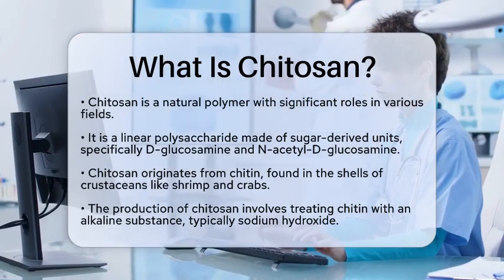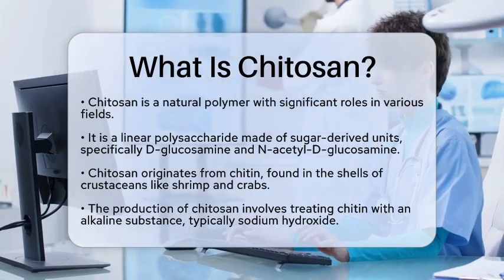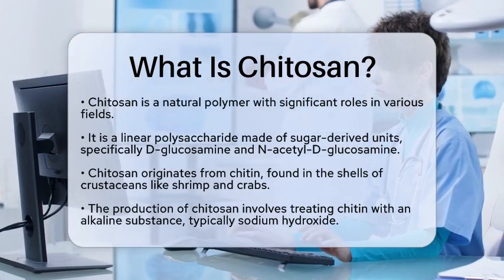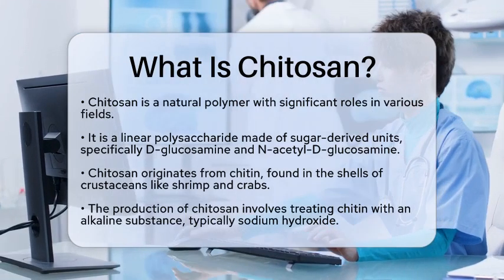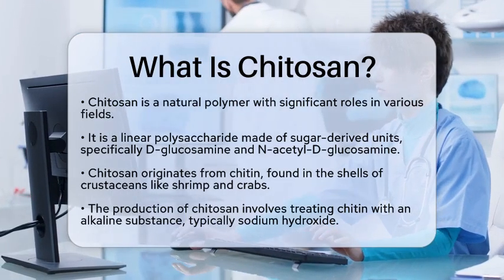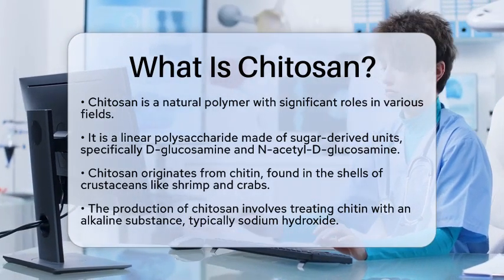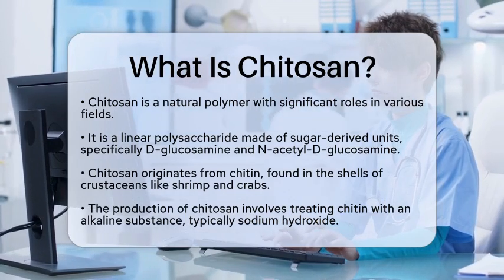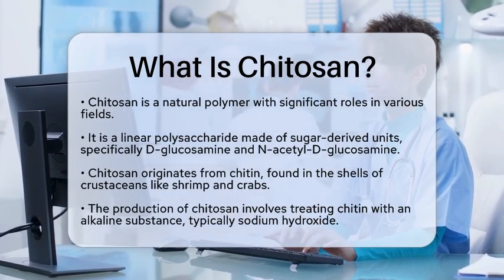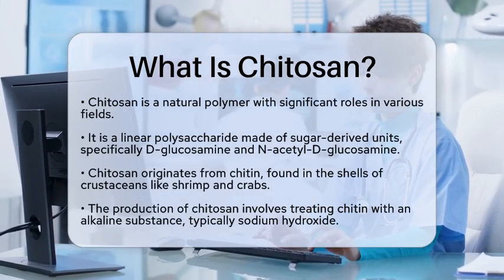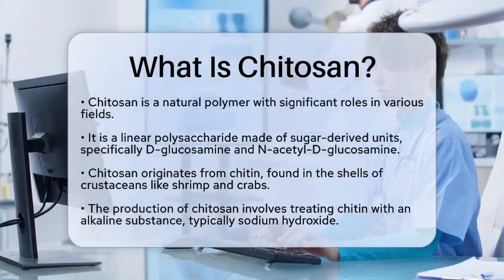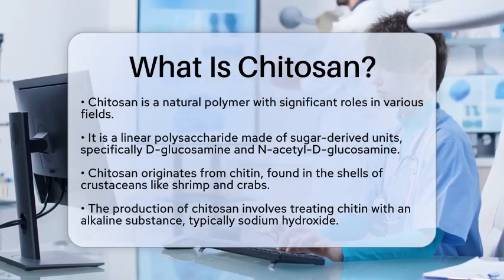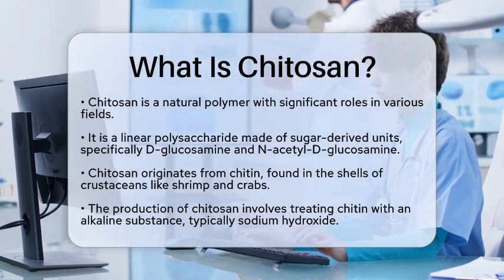Chitosan is a linear polysaccharide, which means it is a long-chain molecule made up of sugar-derived units. These units are specifically deglucosamine and N-acetyl deglucosamine, linked together by special bonds.